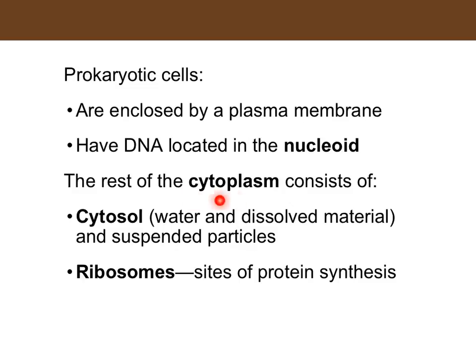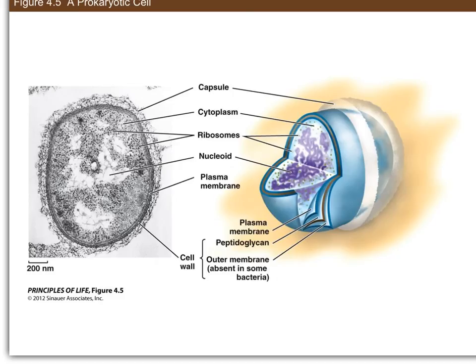The cytoplasm of prokaryotes consists, just like in eukaryotic cells, of a cytosol, with ribosomes and other structures essentially dissolved in solution in the cytosol. Here you have a look at the parts of a prokaryotic cell. Not all of these do you have to know or identify — especially the specific layers of the cell wall — but depending on the type of prokaryotic cell, it may have a varying complexity to it.